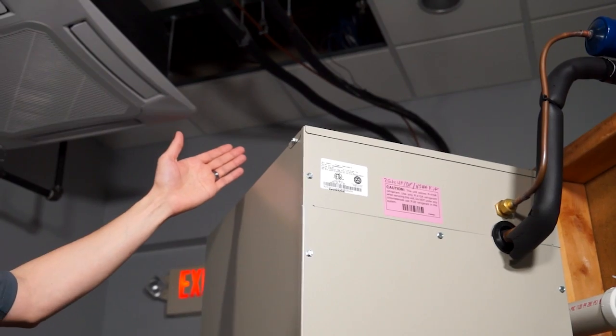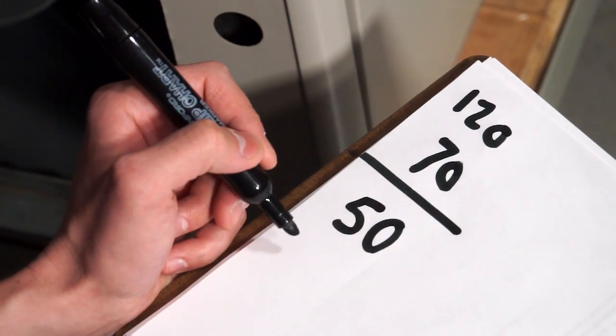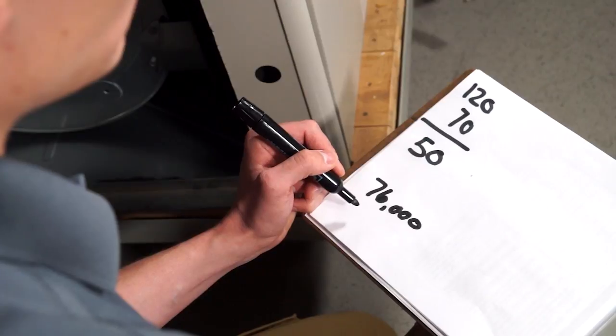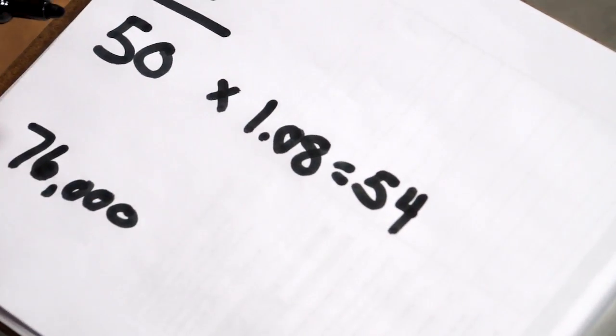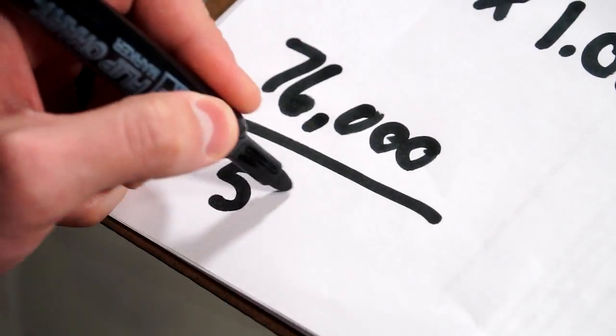Get the supply temperature. Get the return temperature. Calculate the temperature rise. Find the BTU number. Take your temperature rise times 1.08 and calculate the CFM.